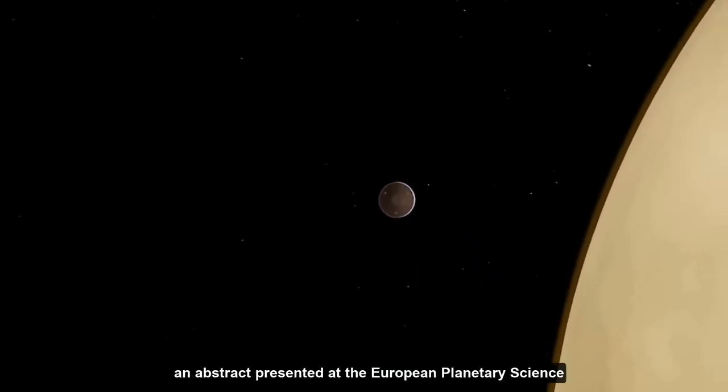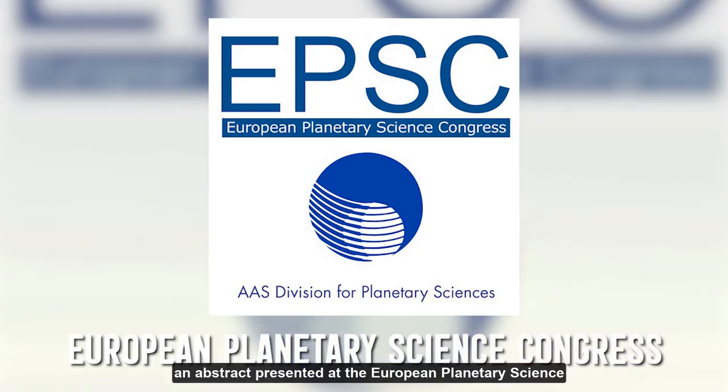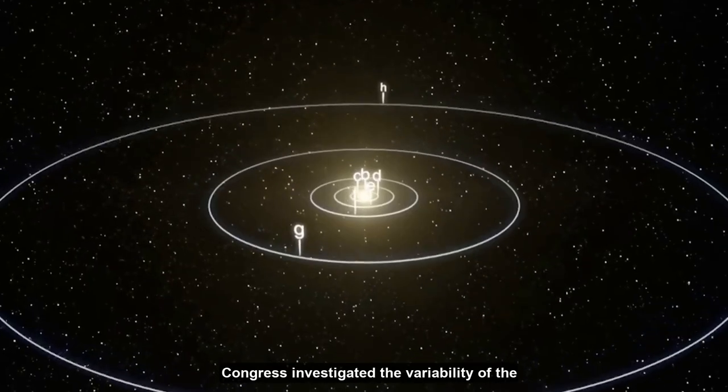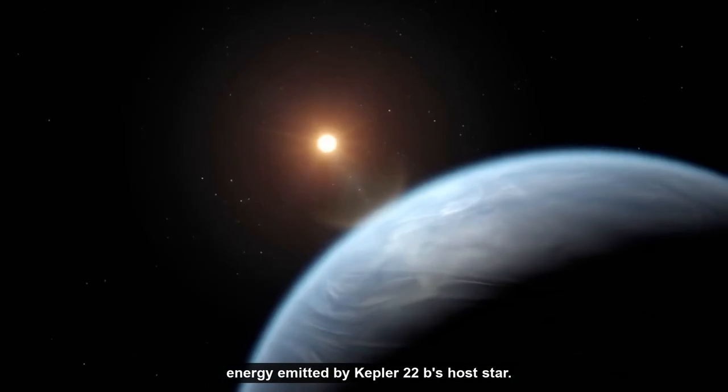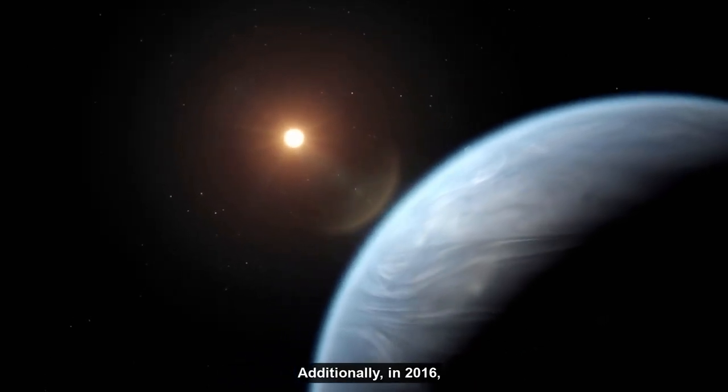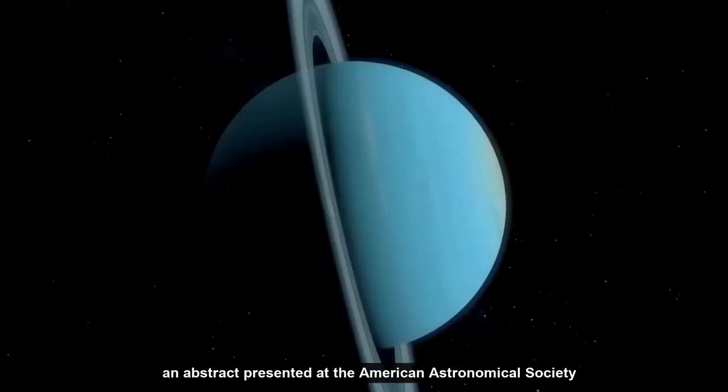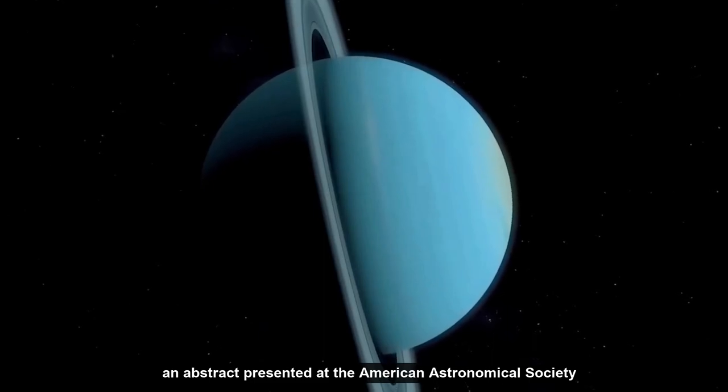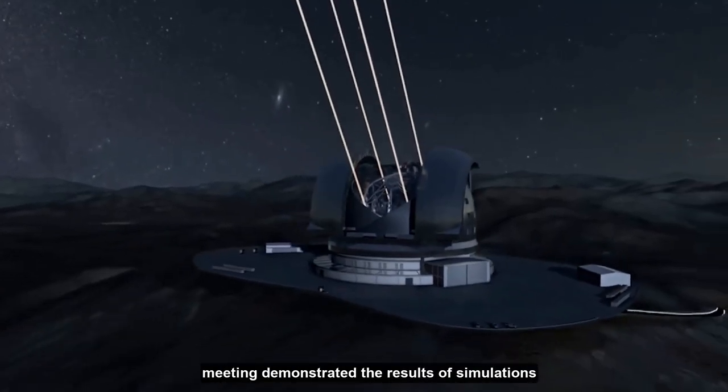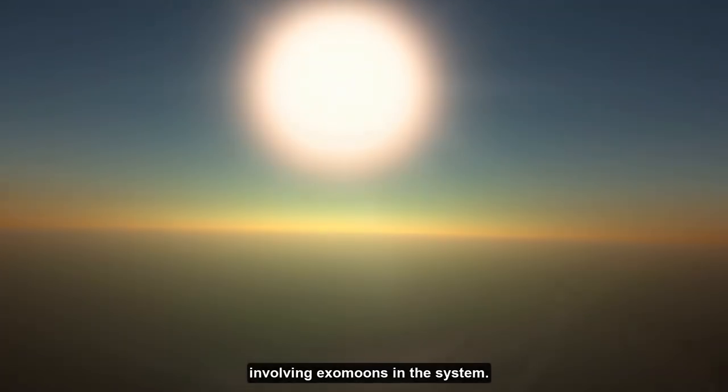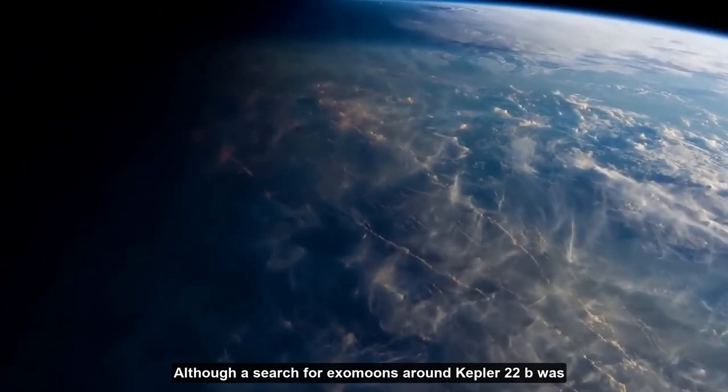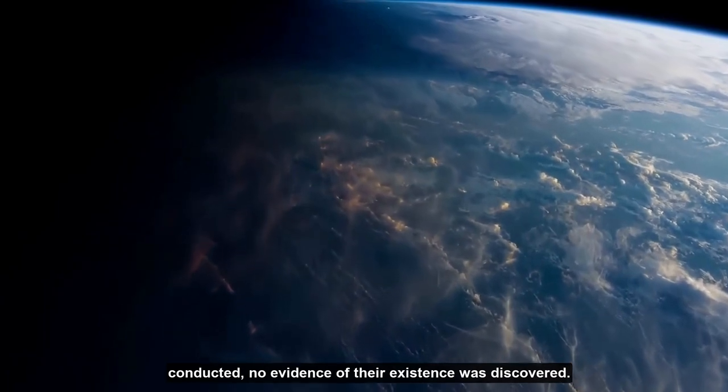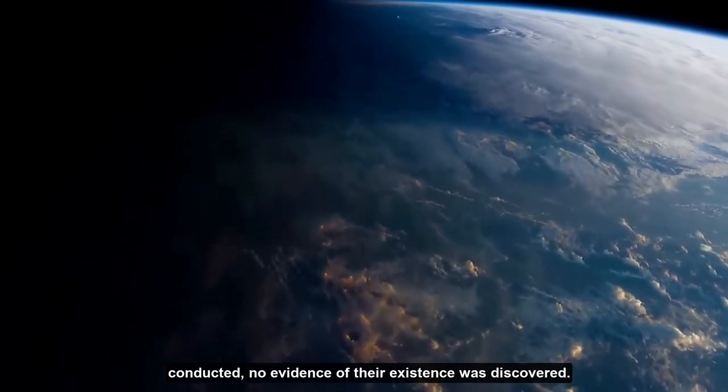In 2015, an abstract presented at the European Planetary Science Congress investigated the variability of the energy emitted by Kepler-22b's host star. Additionally, in 2016, an abstract presented at the American Astronomical Society meeting demonstrated the results of simulations involving exomoons in the system. Although a search for exomoons around Kepler-22b was conducted, no evidence of their existence was discovered.